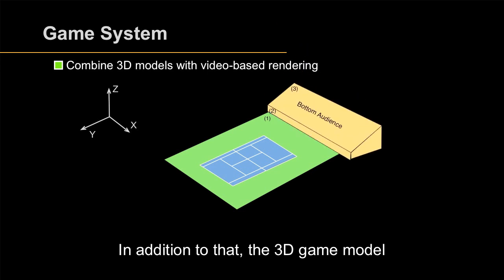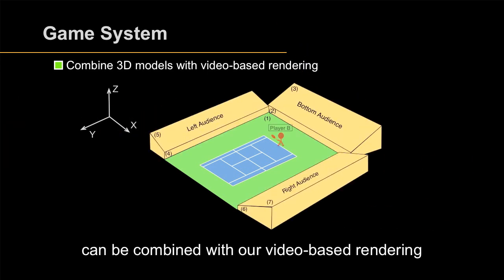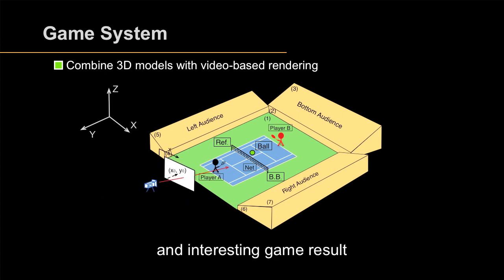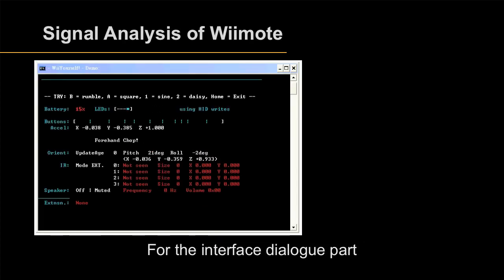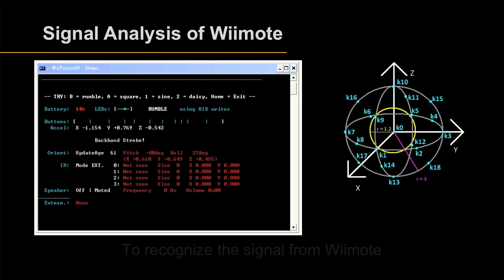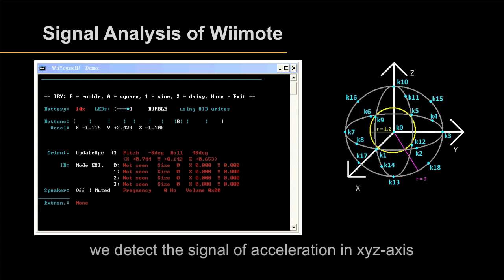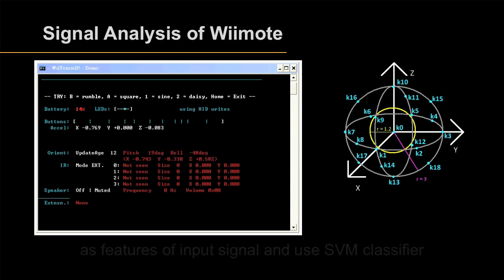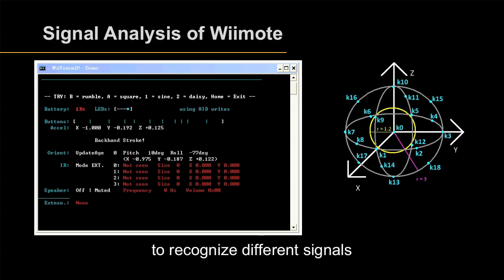In addition, the 3D game model can be combined with our video-based rendering, which provides more vivid visual effects and interesting game results. For the interface, we use Wiimote to control the player. To recognize the signal from Wiimote, we detect the acceleration signal in the X, Y, and Z axes as features of the input signal, and use an SVM classifier to recognize different signals.